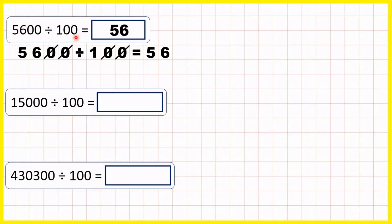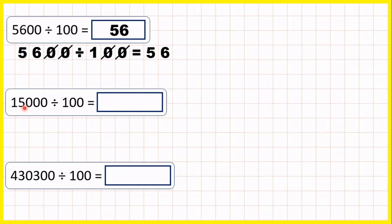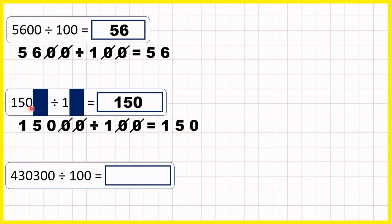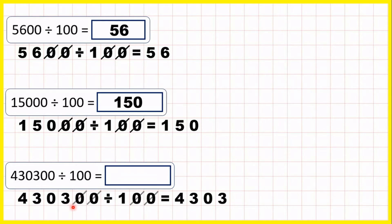So 5,600 divided by 100 gives the same answer as 56 divided by 1. For 15,000 divided by 100 we cancel two end zeros, giving 150 divided by 1, which is 150. We have to be careful here — we still need that remaining zero. We can only cancel two end zeros because there are two zeros in 100. For 430,300 divided by 100, when we cancel the end zeros we get 4,303. You can see what we're doing with the end zeros.